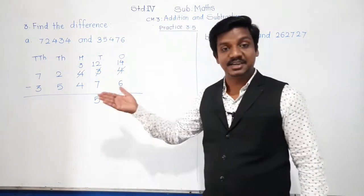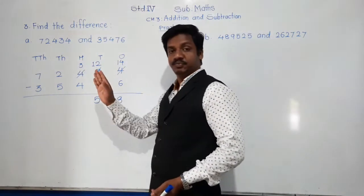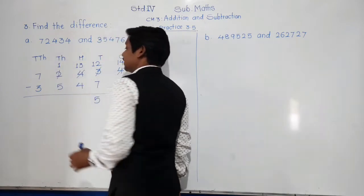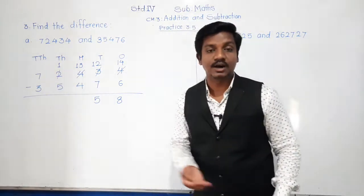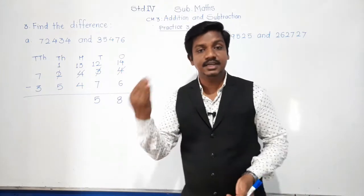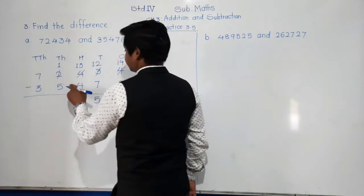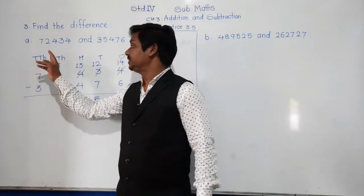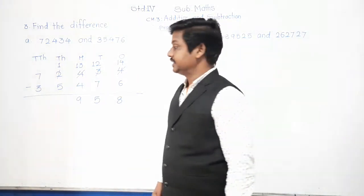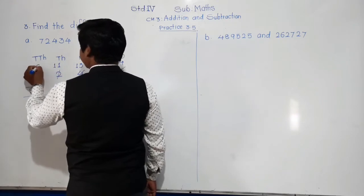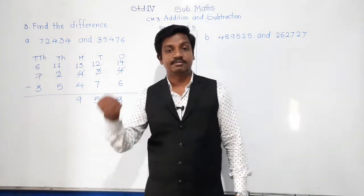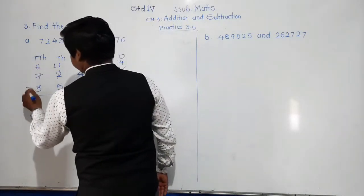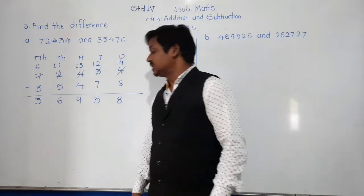At hundreds place: 3 minus 4 — not possible, because 3 is less than 4. Borrow from thousands: 2000 gives 1, becoming 1000, and hundreds become 13. 13 minus 4 is 9. At thousands place: 1 minus 5 — not possible. Borrow from ten-thousands: 7 becomes 6, thousands become 11. 11 minus 5 is 6. And 6 minus 3 is 3. So the difference between these two numbers is 36,958.